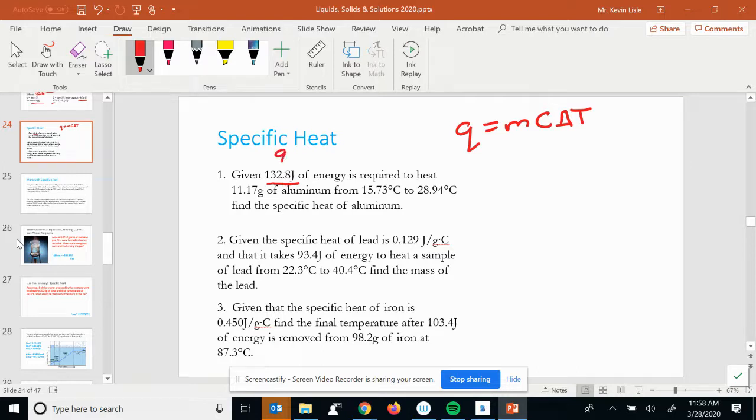I'm going to underline that. I'm going to label that as Q. Okay, that's what that is. Heat energy is required to heat 11.17 grams. Again, underline it. That is the mass of aluminum.